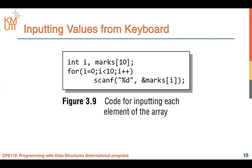The second method to assign values is inputting from the keyboard. If you define int marks[10] and use a for-loop from zero to ten, you can use scanf with the format specifier %d and &marks[i] to read input from the keyboard and assign it to the corresponding array location.